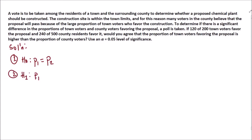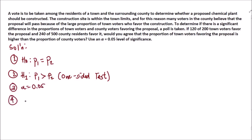The alternative hypothesis states that the proportion of town voters is higher compared to the proportion of voters from the countryside. Because we have a statement involving 'higher than,' this is a one-sided test. This will come in handy when we determine our decision rule and critical regions. Our alpha is 0.05.